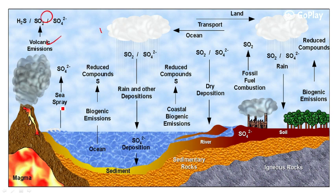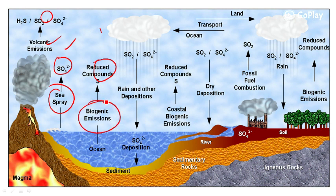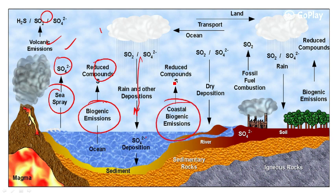Sea sprays also contribute sulfur dioxide into the atmosphere, and living organisms in the ocean contribute reduced compounds of sulfur through biogenic emissions. Sulfur dioxide present in the atmosphere is returned to the earth by way of rain and other deposition — acid rain is one of them. It re-enters the oceans, and coastal biogenic emissions also contribute reduced sulfur compounds into the atmosphere.